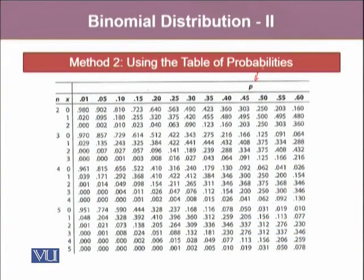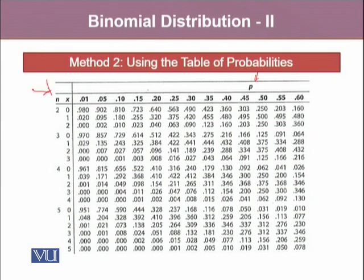The second method to calculate the binomial probabilities is using the table of probabilities. Usually these tables are available. In the given table, on the column side, it shows the P, which is the probability of success for an event of interest. N denotes the number of times the Bernoulli trials will be repeated, and X denotes the number of successes one can achieve in N trials.